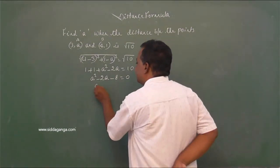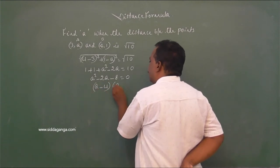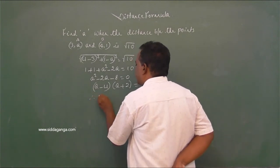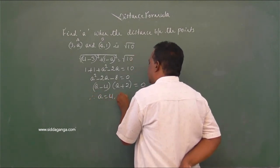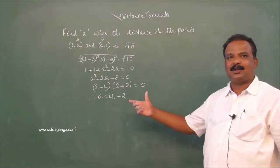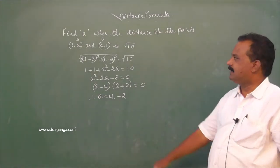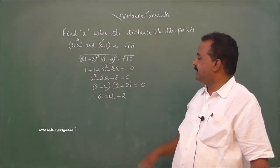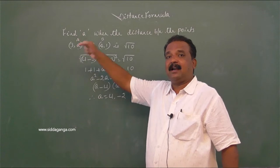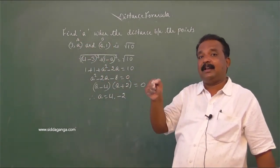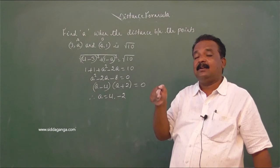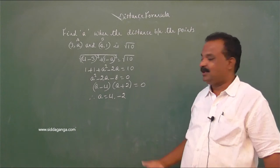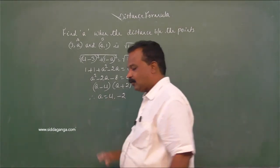Factorising: (A − 4)(A + 2) = 0. Therefore A = 4 or A = −2. These are the two possible values. A = 4 means the point lies in the first quadrant (y positive). A = −2 means y-coordinate is negative, so the point lies in the fourth quadrant.